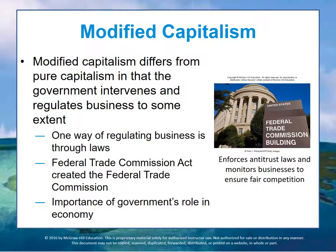Modified capitalism differs from pure capitalism in that the government intervenes in markets and regulates businesses to some extent. One of the ways in which the United States and Canadian governments regulate business is through laws — such as the Federal Trade Commission Act, which created the Federal Trade Commission (FTC) to enforce antitrust laws and ensure companies don't get too large so that competition is maintained.